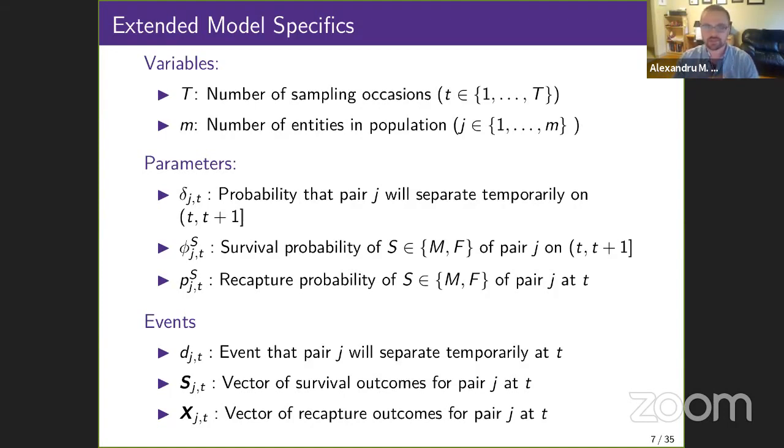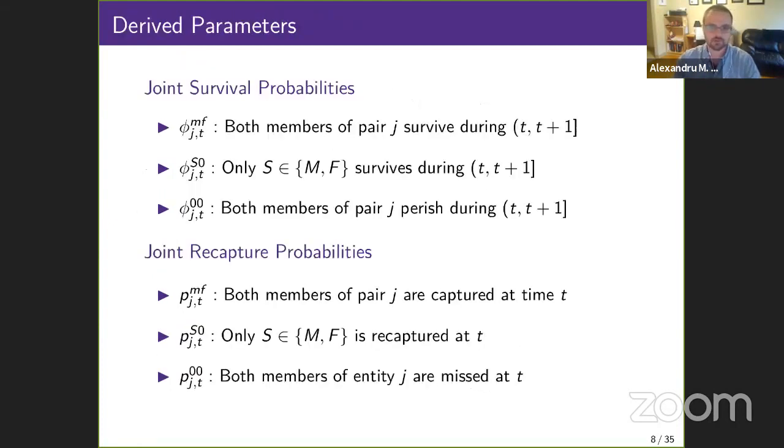We also account for the possibility that mates may temporarily act as independent from one another. We've observed that, for example, in Harlequin ducks, breeding can be skipped in some periods due to unfavorable environmental conditions, such as a lack of food, and then they won't form a pairing for that time period. So we denote the joint survival and recapture probabilities for a mated pair with phi and p respectively, with the state for each probability term in the superscript of the parameter for convenience of notation. For example, phi to the MF is the probability that a pair both survives from one time point to another.